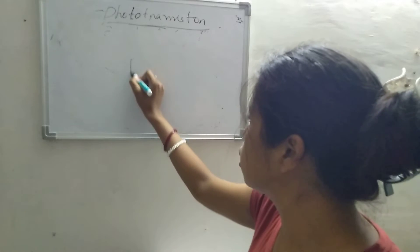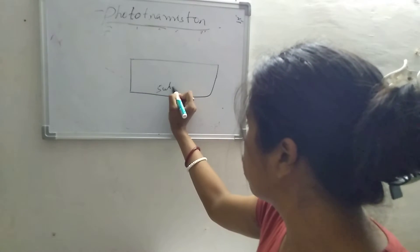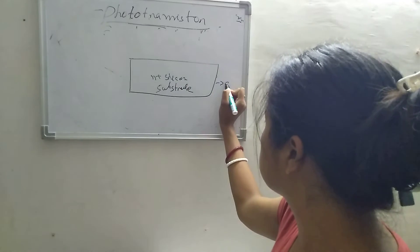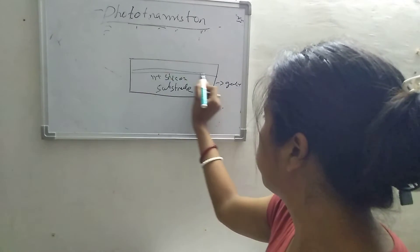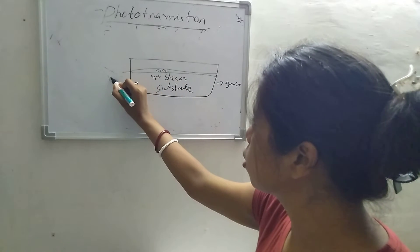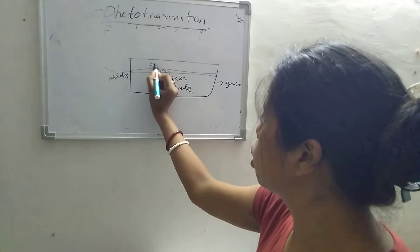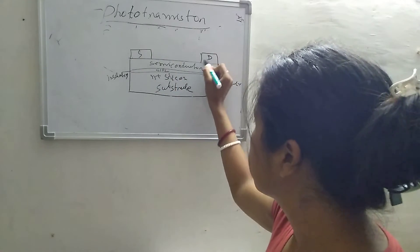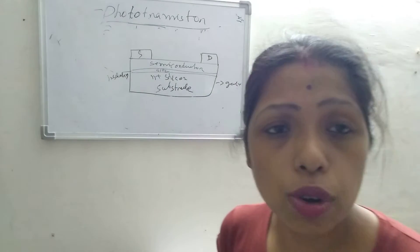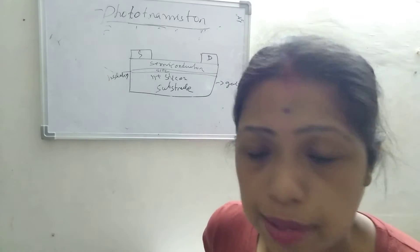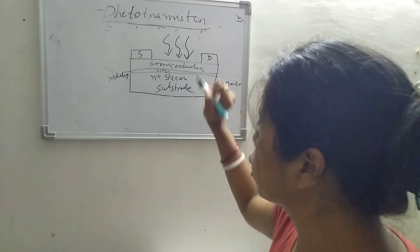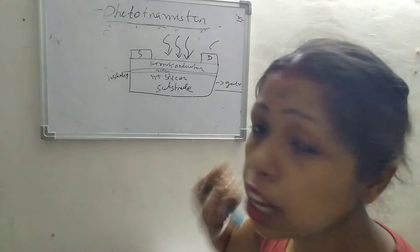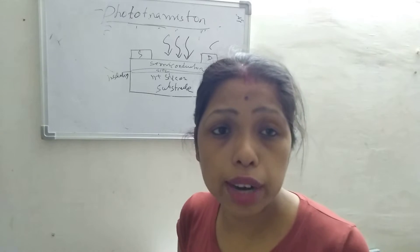The structure I have already explained in the last class, again I am drawing the structure. This is the substrate, above this M-plus silicon layer is there, which is the gate terminal. Then one silicon dioxide layer is there, this is the insulating layer, then semiconductor layer is there. Above these two metallic layers is the source and the drain. This semiconductor layer is also known as the channel layer or active layer. When light is incident on the semiconductor, electron-hole pairs will be produced and that will be collected by the drain terminal by applying the gate voltage and the drain voltage. This is the photocurrent.